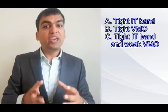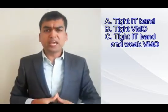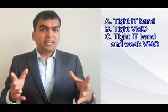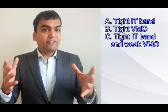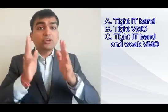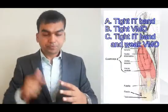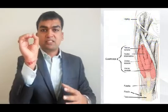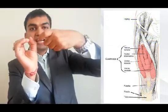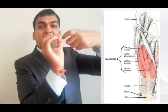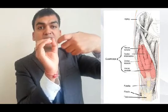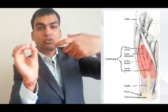Option two is VMO tightness. Options one and three are almost the same, but option three has one extra component which is VMO weakness. Let's work on VMO and see whether option B is right. The patella is here, and VMO is attached on the medial side. If it is tight, it will definitely pull the patella towards the medial side, and if it is weak, it would not be able to check the lateral glide, putting the patella in excessive lateral gliding. So VMO tightness will never cause excessive lateral gliding — its weakness will. So answer B is wrong.